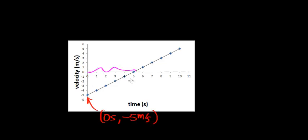In this video, what I'd like to do is take a look at a velocity versus time graph in which our initial velocity is negative. Now in this case, this point right here is represented by zero seconds. Notice over the first five seconds the velocity is going from negative five meters per second to zero meters per second.